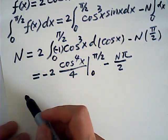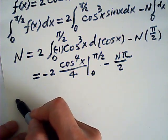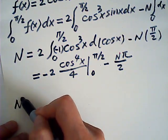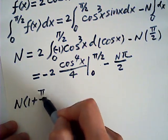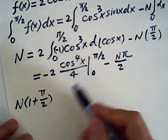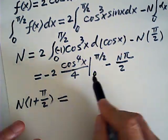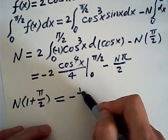Then we move this one over there. We get N times 1 plus pi over 2 is equal to negative cosine to the fourth x over 4 from 0 to half pi minus N pi over 2.